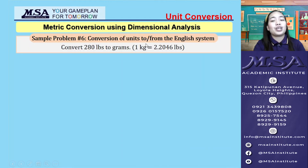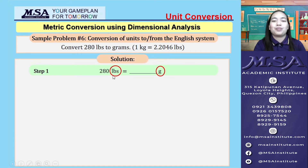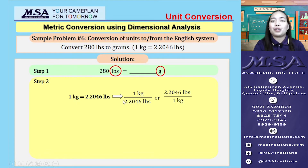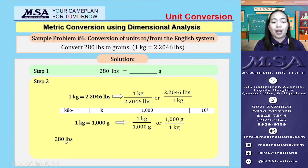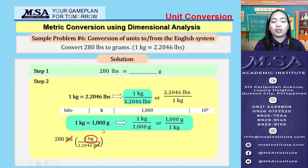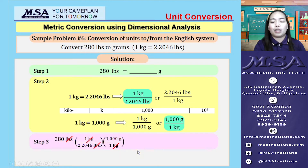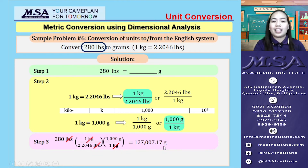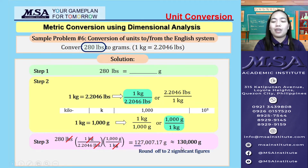Now let's move on to conversion of units to or from the English system: convert 280 pounds to grams. We use the conversion factor 1 kilogram = 2.2046 pounds, then convert kilograms to grams using 1 kilogram = 1,000 grams. Canceling pounds then kilograms gives 127,007.17 grams. Applying significant figures rules, the final answer rounded to 2 significant figures is 130,000 grams.